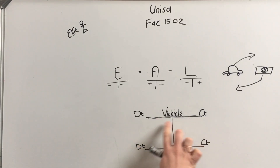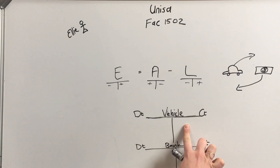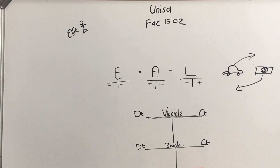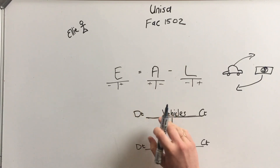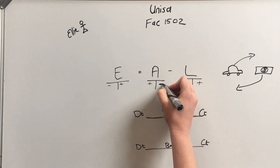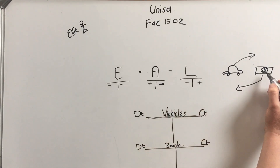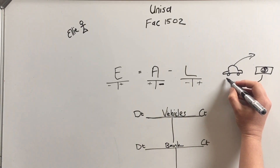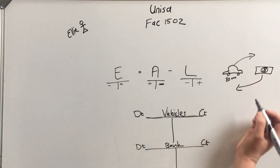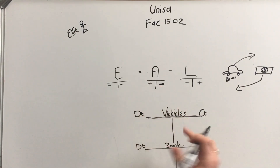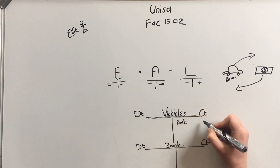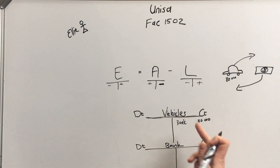Are we going to debit or credit vehicles? The way to figure this out is to say: vehicles is an asset. When we sell an asset, the account goes down — it gets less. Let's say it was worth 80,000 Rand. So the vehicle account gets less by 80,000.